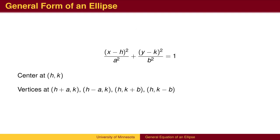As we did with the circle, we can shift the center to the point (h, k). We will have vertices to the left and right of the center by a distance of a, and vertices above and below center by a distance of b.